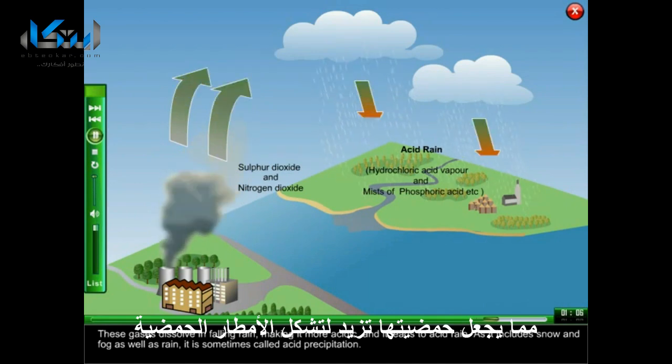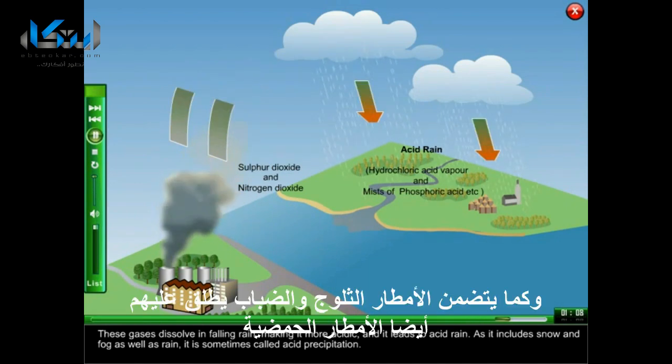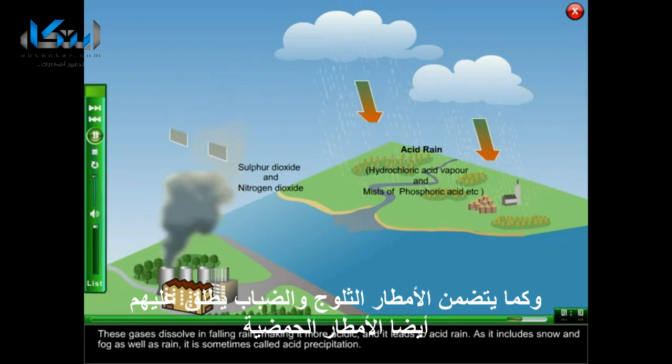As it includes snow and fog as well as rain, it is sometimes called acid precipitation.